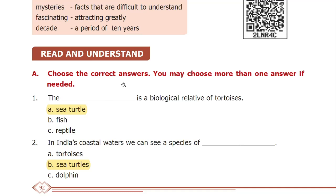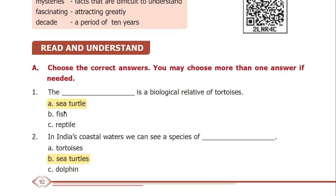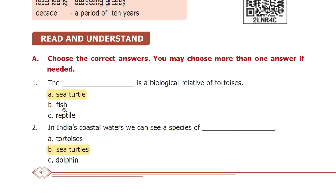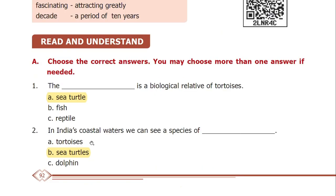Choose the correct answers. First: the sea turtle is a biological relative of tortoises — answer: sea turtle. In India's coastal waters, we can see 5 species of sea turtles. Sea turtles come to shore to lay eggs.